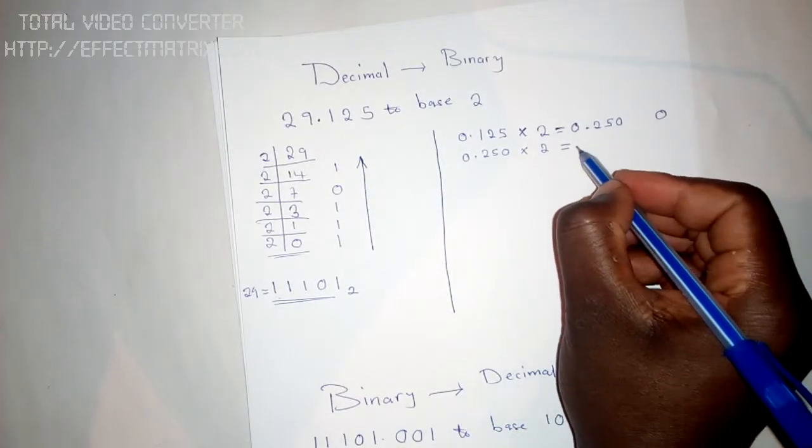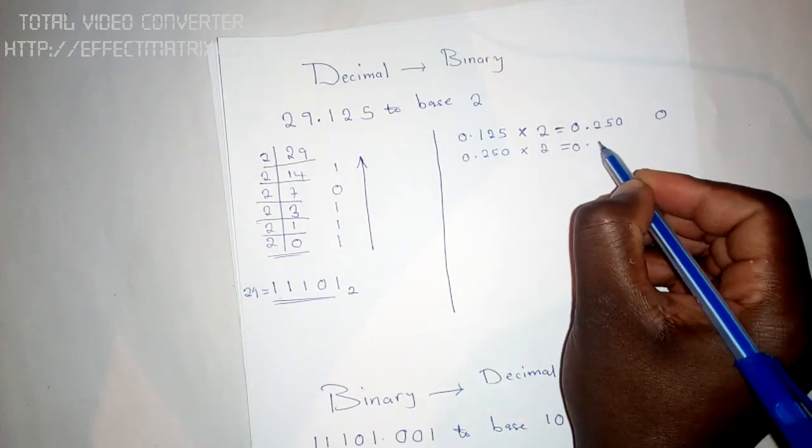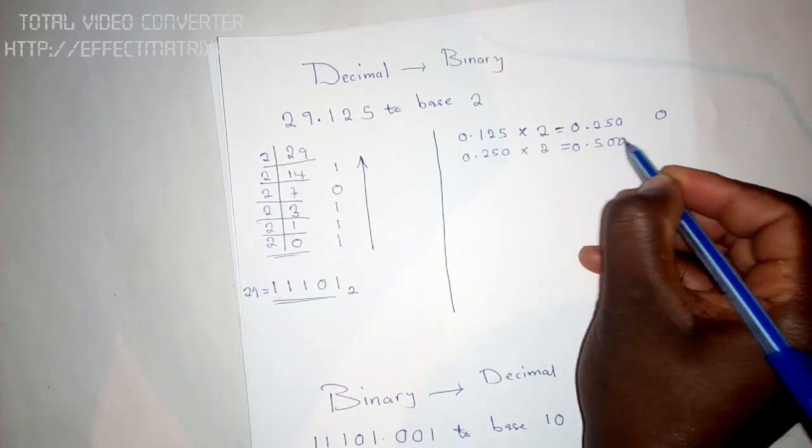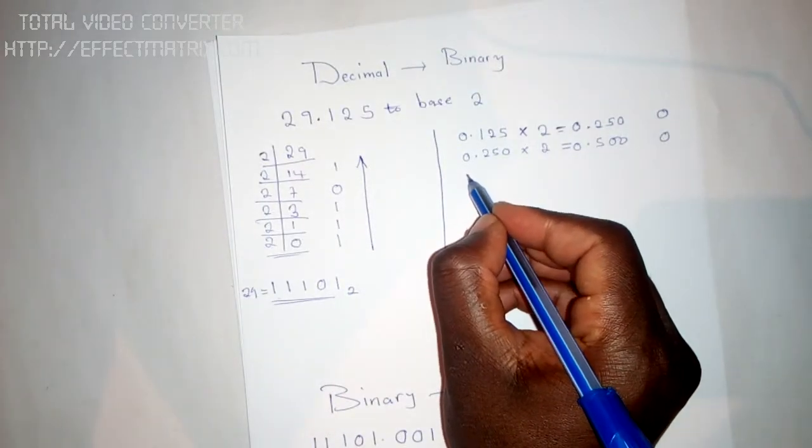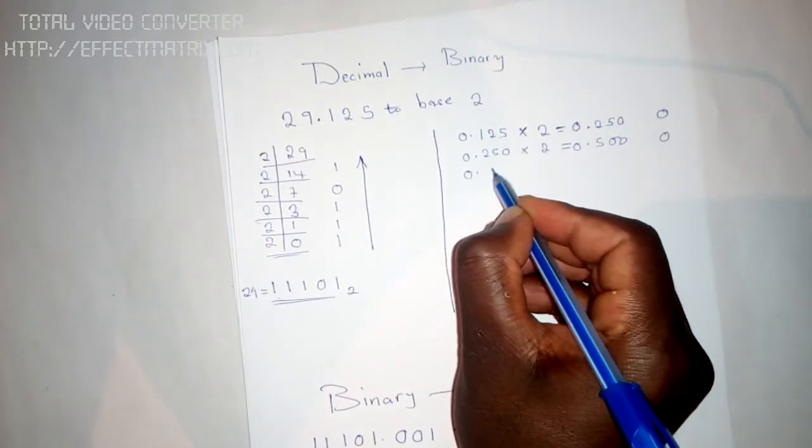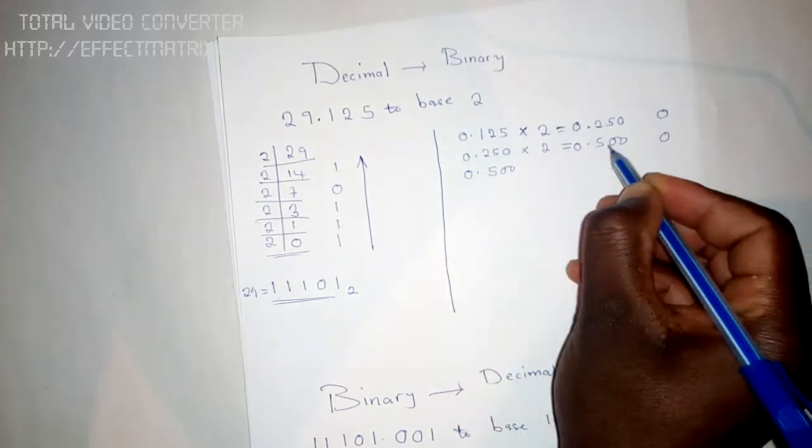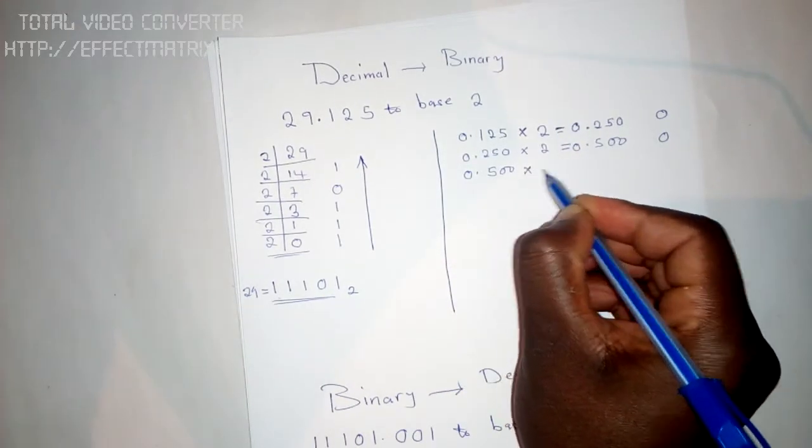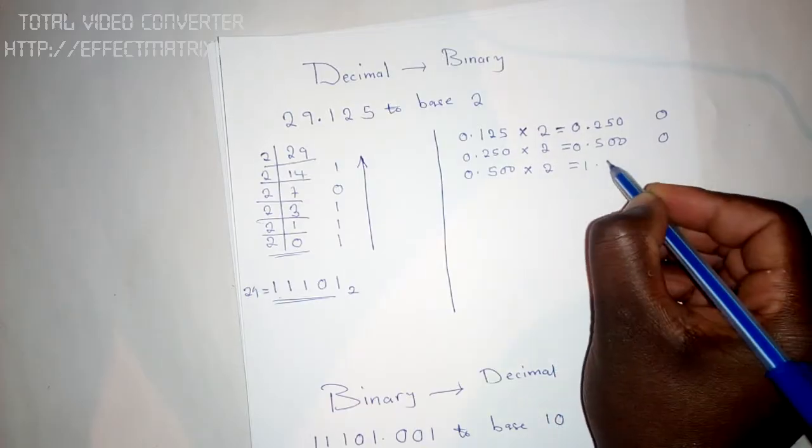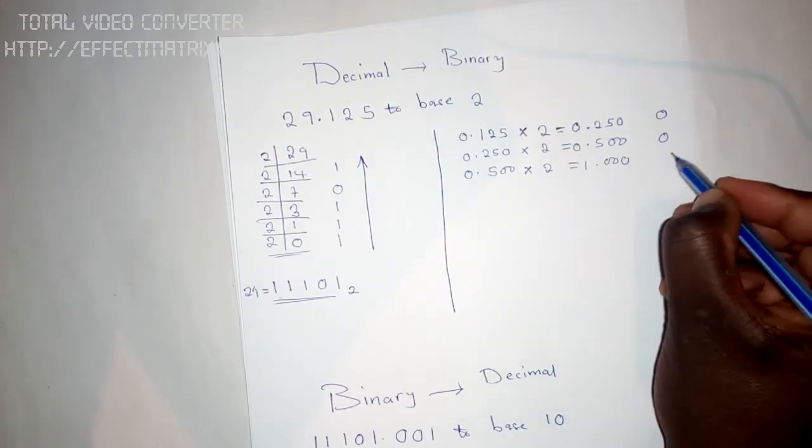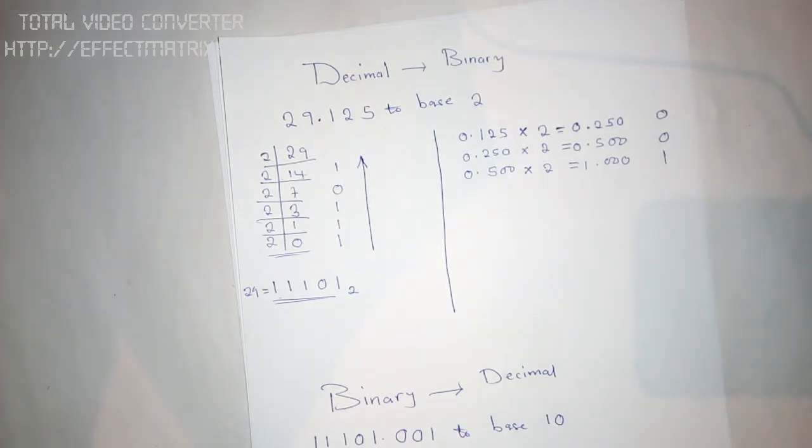It will give you 0.500. You get the number that is in front, which is 0. Next, 0.500 by 2 will give you 1.000, so you write the one that is in front.